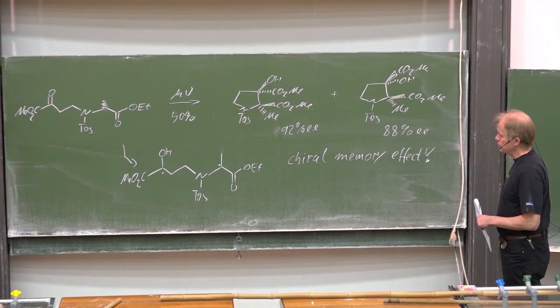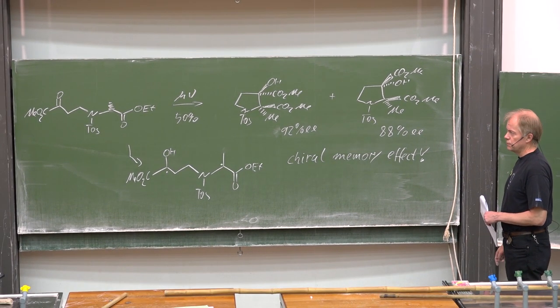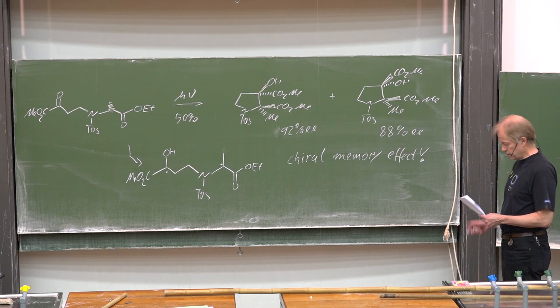And how does that work? Well, obviously there is that explanation that the recombination of the radicals, the CC bond formation, is so fast that the time is not enough for any isomerization or conformational change after that hydrogen is abstracted. So chiral memory effect.